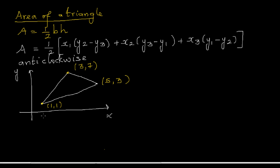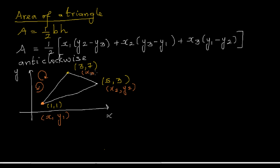The way we identify them is it has to be anti-clockwise or counterclockwise. You can start at any point, so let's start at (1,1) — this is x1, y1. Anti-clockwise means going the other way from clockwise. So we go anti-clockwise: (5, 3) is x2, y2, and (3, 7) is x3, y3. If you go clockwise, your area would be negative.